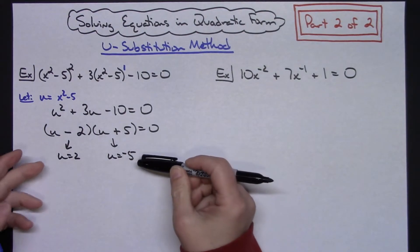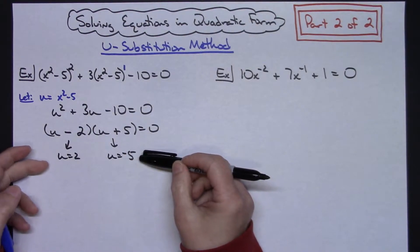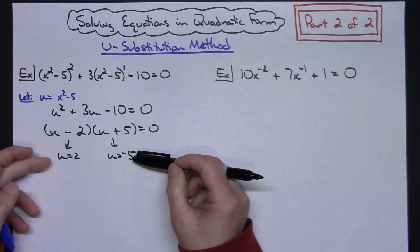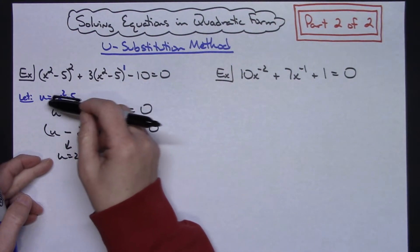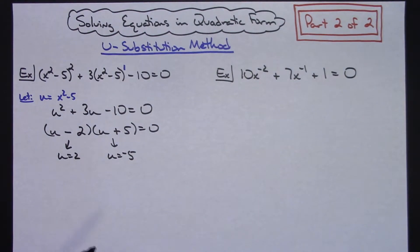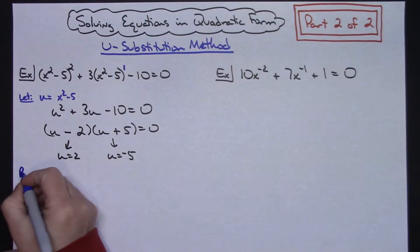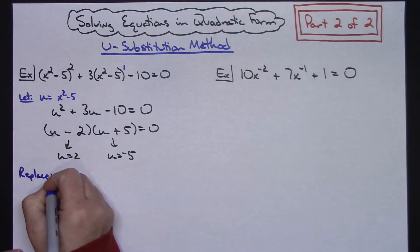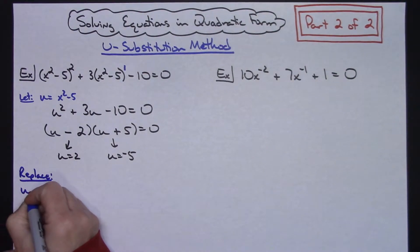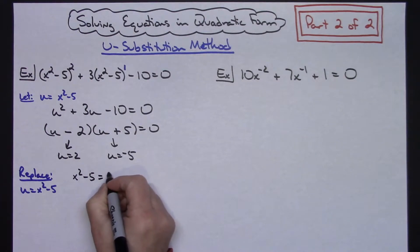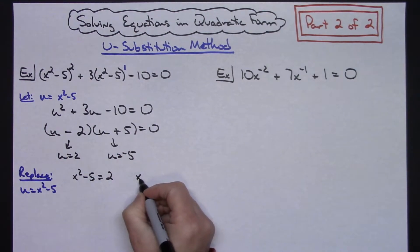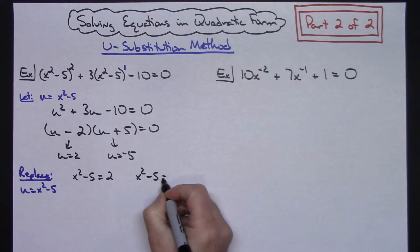Now if you remember in the first video, we said you've got to make sure you don't forget - you cannot stop at this point. These are not your solutions because you have solved for u. That original equation was in terms of x. So I've got to replace my u equals x squared minus 5 in order to finish solving this. I'm going to take this expression and replace the u with x squared minus 5. So I have x squared minus 5 equals 2, and x squared minus 5 equals negative 5.